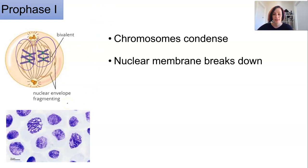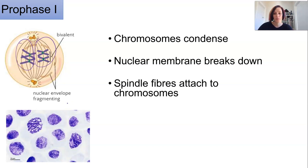So at this stage the nuclear membrane starts to break down and the spindle fibres will come and attach at the centromere but it's important to know that these are homologous pairs. These are chromosome couples.